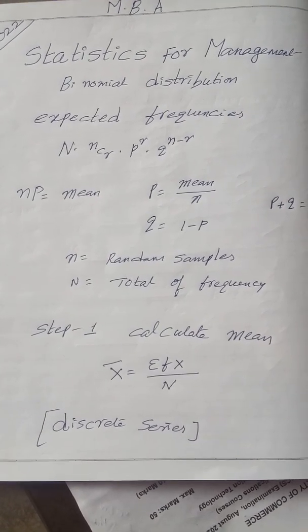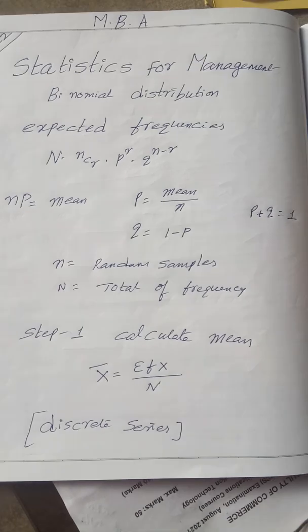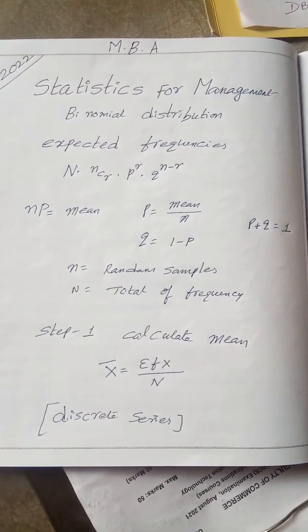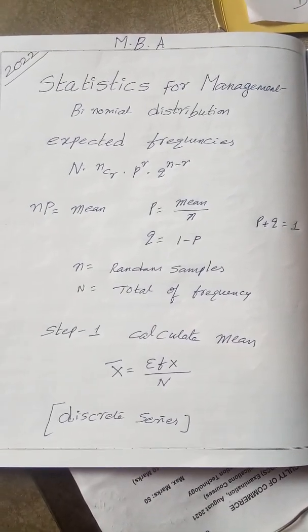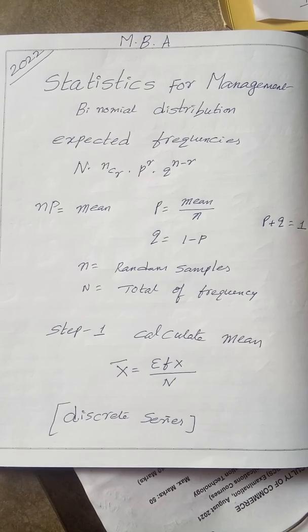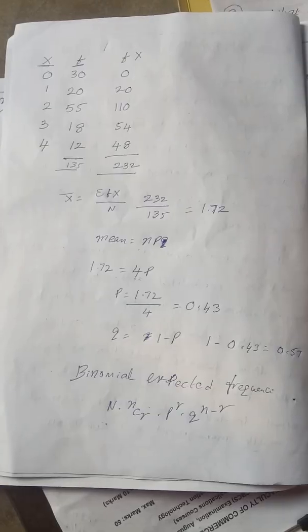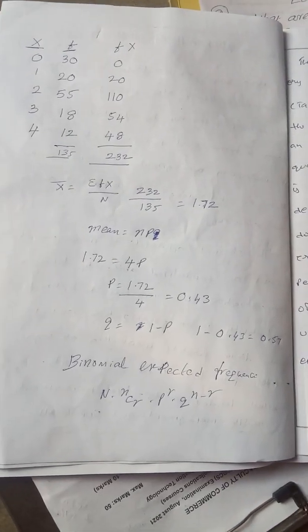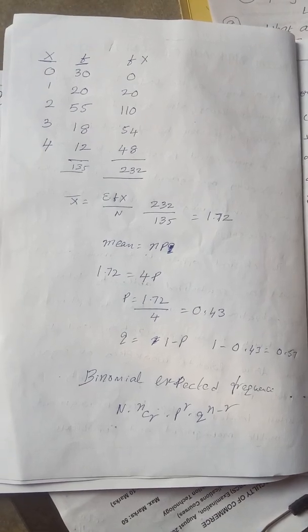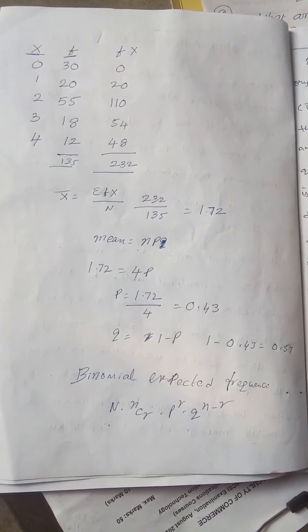First we need to find out P, then we need to find out Q. P plus Q equals 1. For the given problem, first we have done mean. Mean equals X bar equals sigma fx by n.